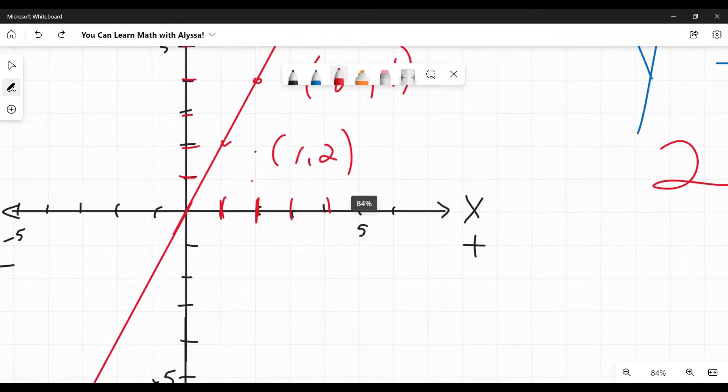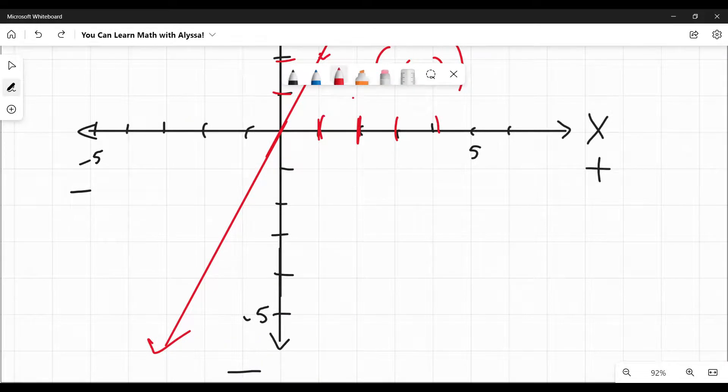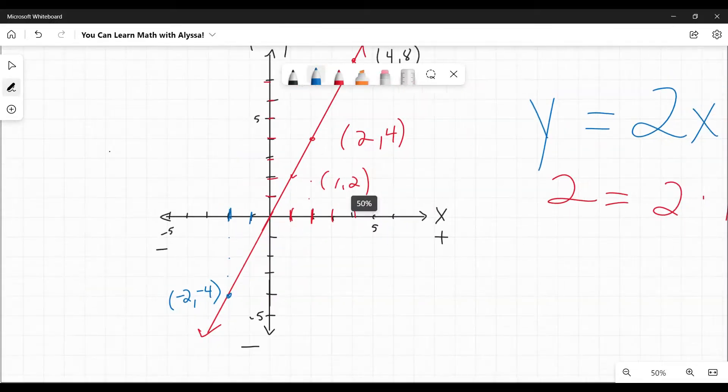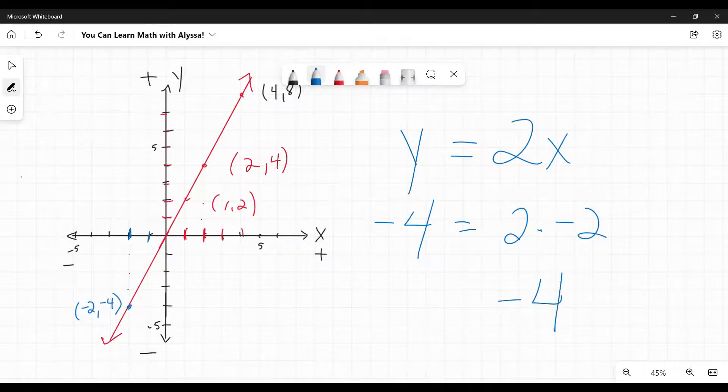And we can go the other way as well. I can look at this line to figure out what numbers make this equation true. So let's say I go down to negative 2, and go down negative 1, negative 2, negative 3, negative 4. So I'm saying because x is negative 2 here and y is negative 4, that those two numbers, negative 2 and negative 4, will work in this equation and it will be true. Well, let's try it. We'll plug in our negative 2 for x and our negative 4 for y. Is that true? Yes, it is. 2 times negative 2 is negative 4. Negative 4 equals negative 4. It's true.